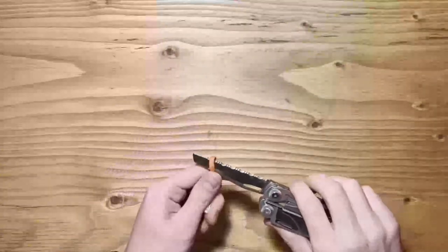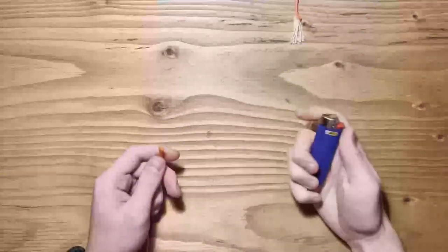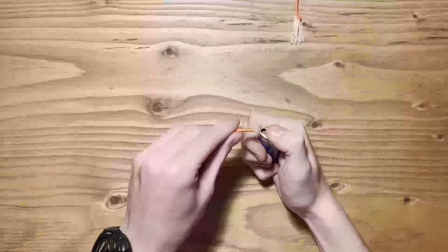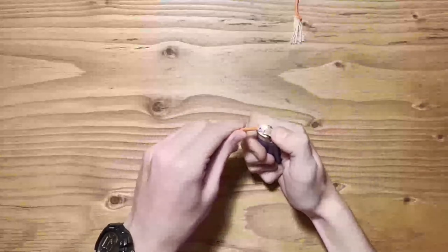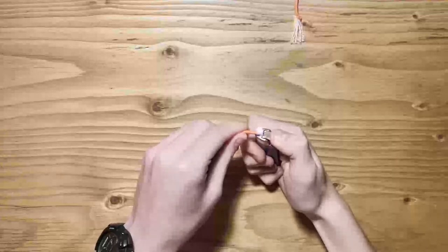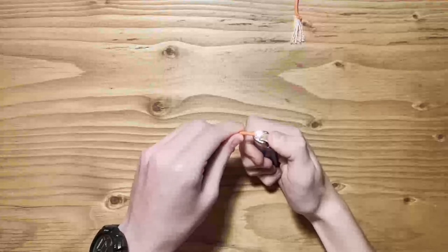To fuse a rope, start by cutting off the bad end. Then, simply take your lighter and burn the end. Once finished, your rope will be melted and will not unravel.